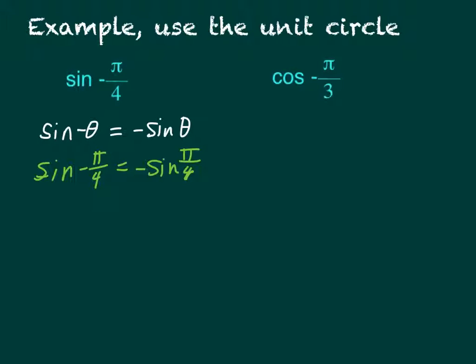So if you know that, then what is sine of pi over 4? Well, that's a 45-degree angle, so it's going to be negative square root of 2 over 2. You can verify with your unit circle. So that's your final answer.